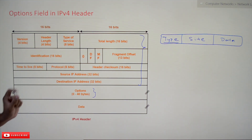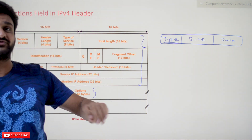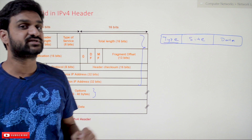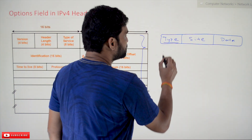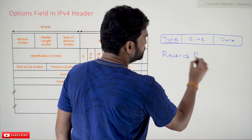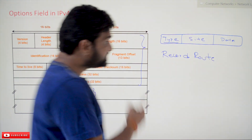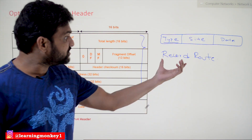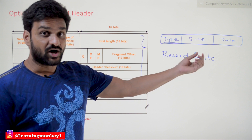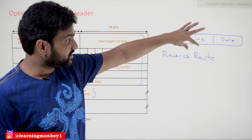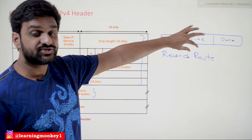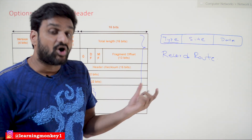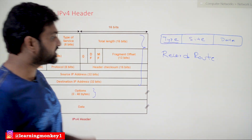Let's understand one example option — the record route option. You are not required to know all the options, but this example helps with better understanding. Record route is generally used by network administrators. Regular packets being transmitted do not typically have such options because they can lead to security issues, so these options are generally not preferred for regular packets.